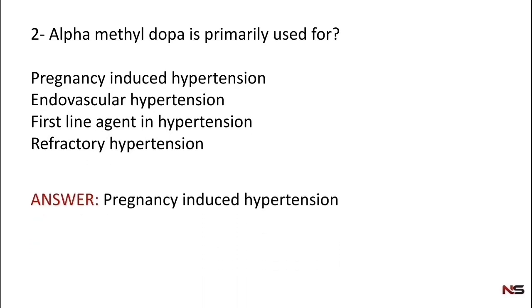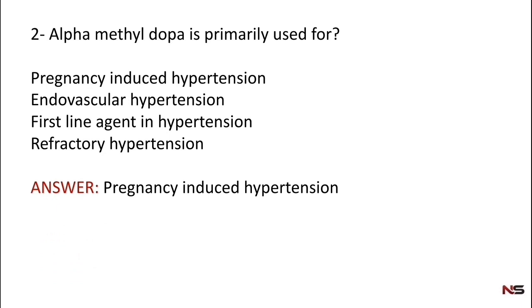The correct answer is pregnancy induced hypertension. The drug of choice for hypertension during pregnancy is alpha methyldopa.